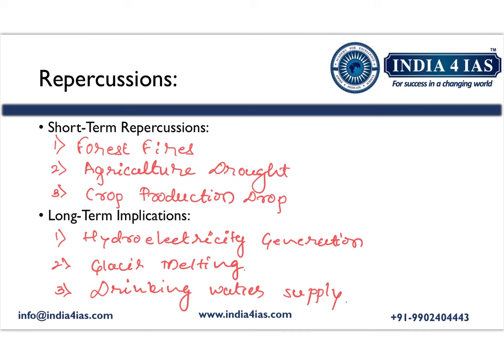The short-term consequences of dry winter in Jammu and Kashmir include: first, forest fires — there is a likelihood of increasing forest fires due to dry conditions; second, an agricultural drop — shortage of water affects agricultural activities; and third, a drop in crop production due to dry conditions and low water availability.